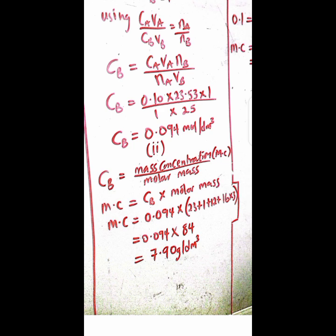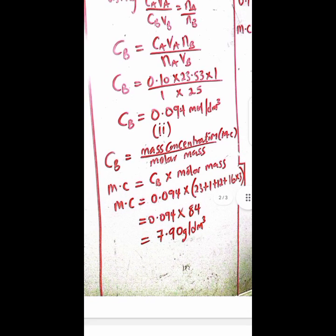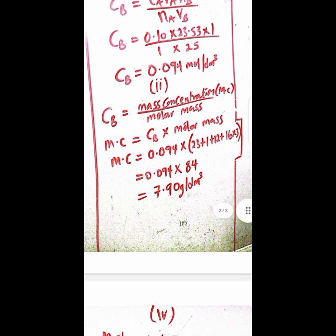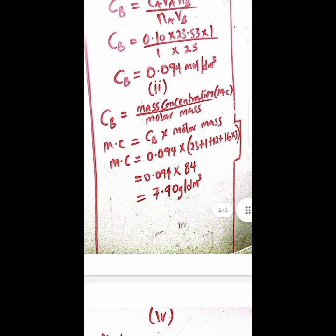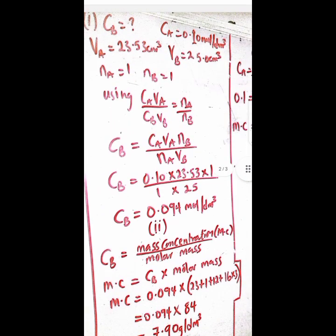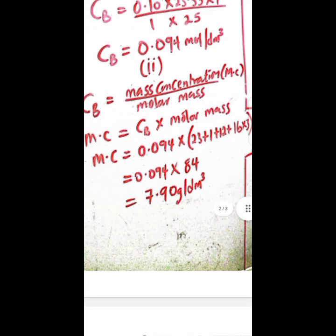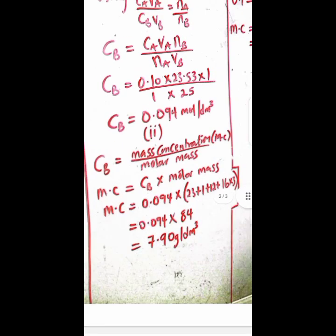Then what is the equivalent mass concentration of 0.094? That gives us CB equals the mass concentration over molar mass. So which means mass concentration would be the molar concentration CB times molar mass. So you have to make anyone you are looking for the subject of the formula like this that will make you get your mark accurately.